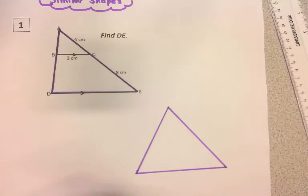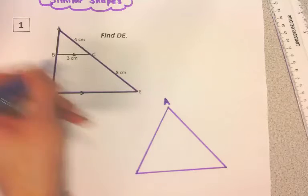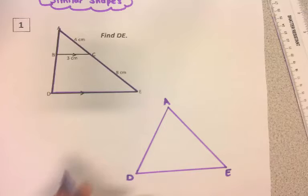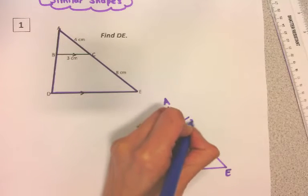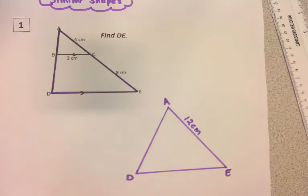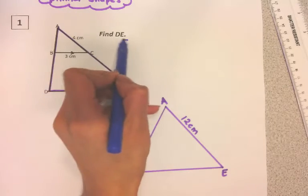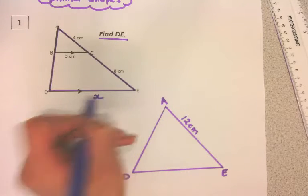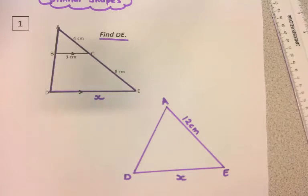I'm going to transfer all the letters over—that's vertex A, vertex D, vertex E. This whole length is 8 plus 4, so this must be 12. Then I'm looking for DE, so I'm going to put an X here and transfer that X here.